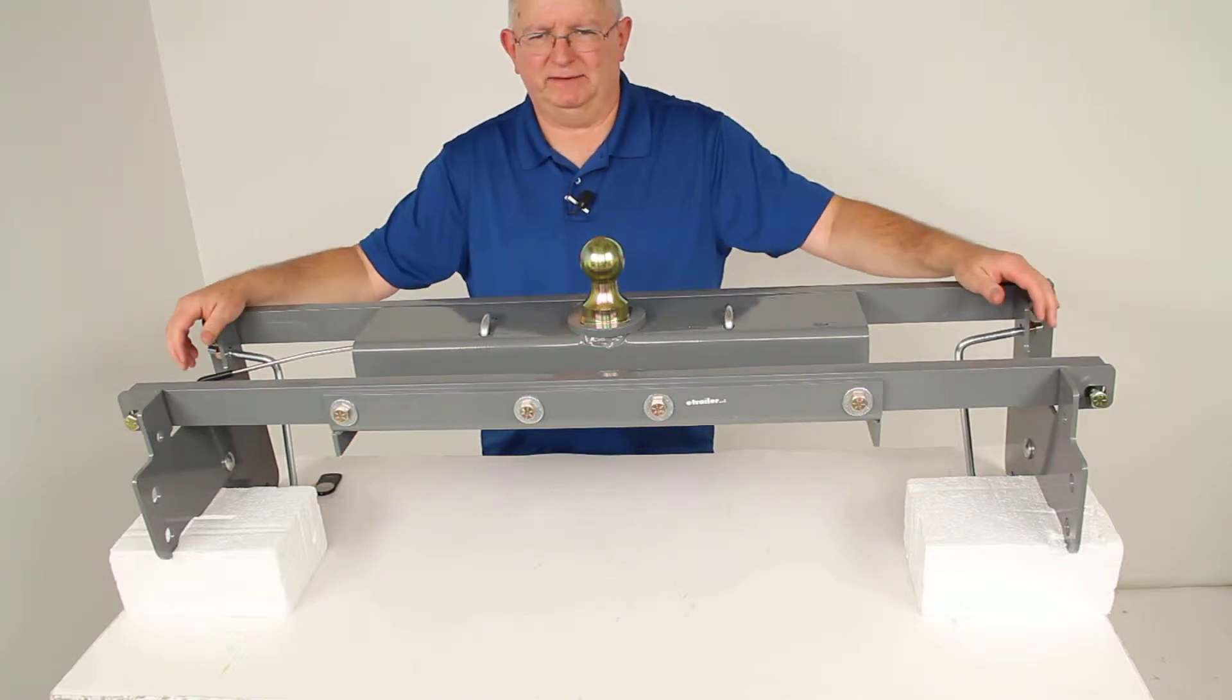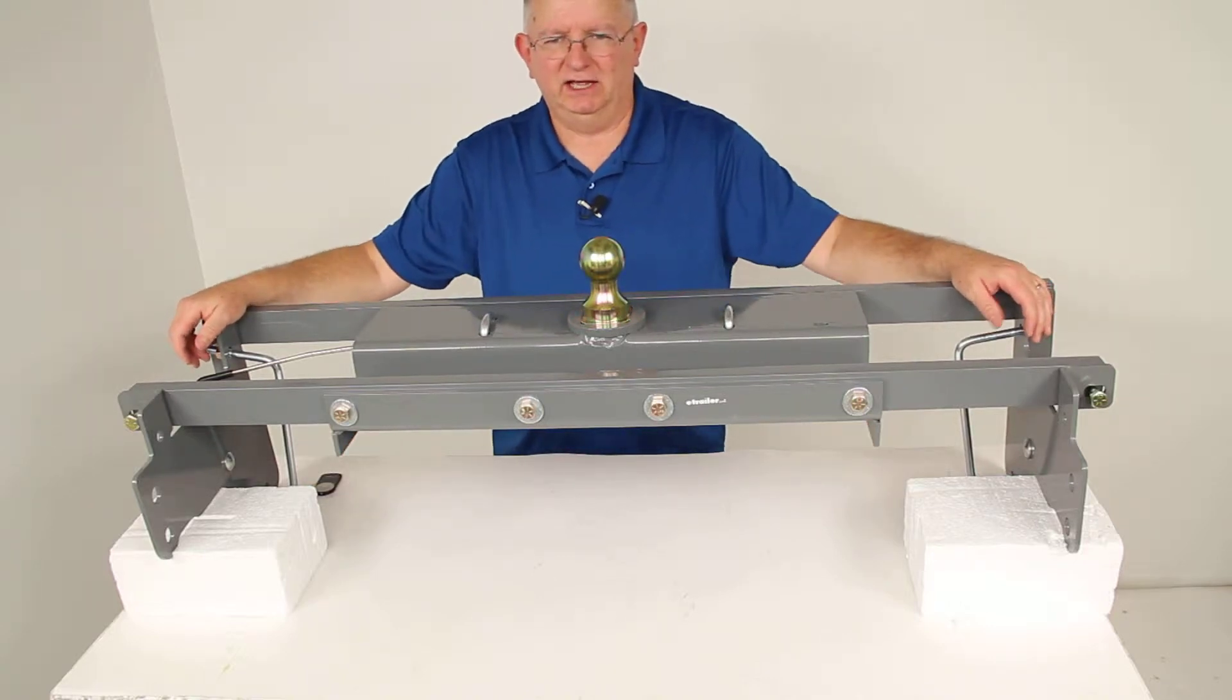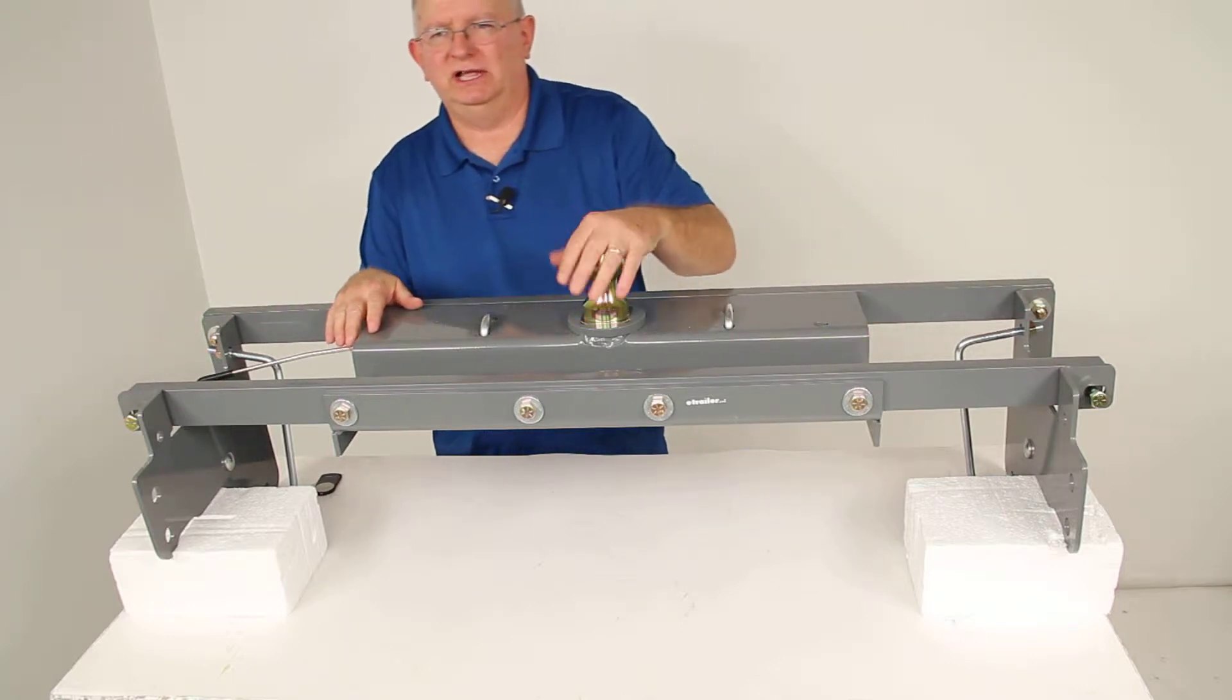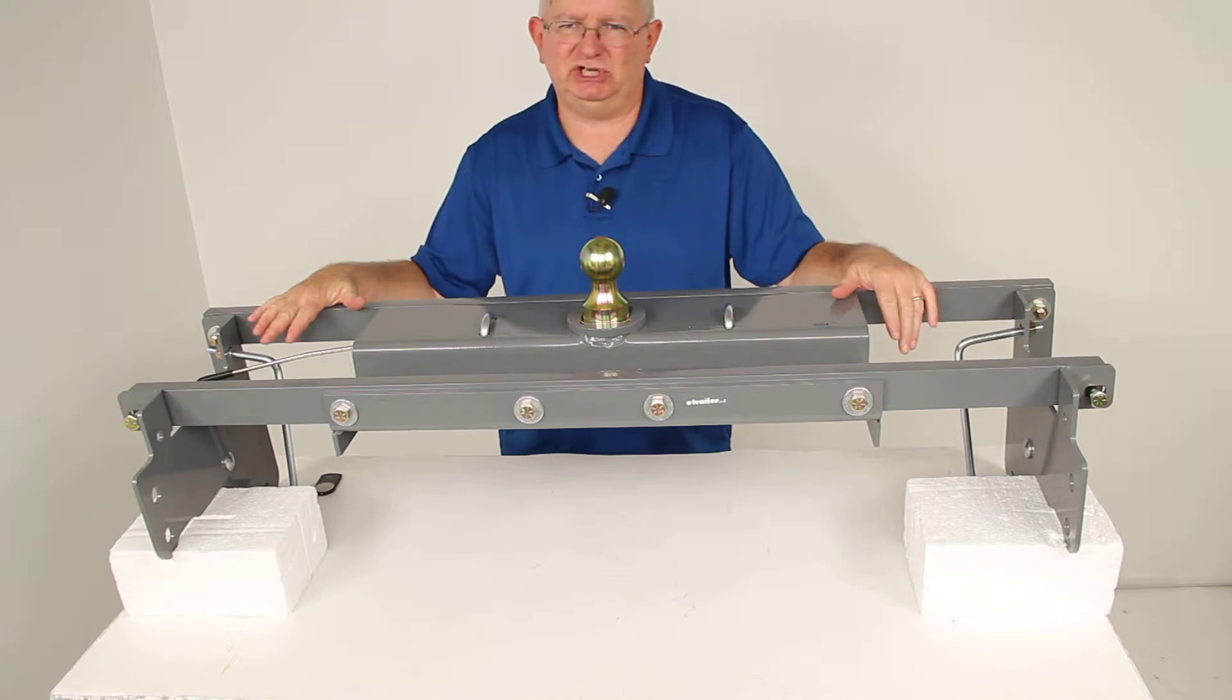Today we're going to review part number BWGNRK1062. This is the B&W turnover ball underbed gooseneck trailer hitch with the custom installation kit.